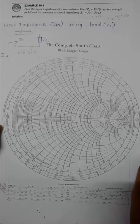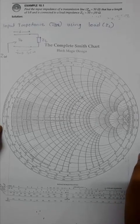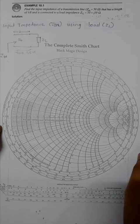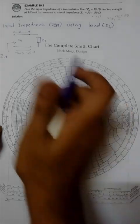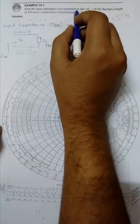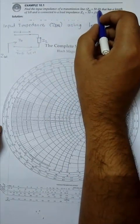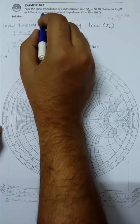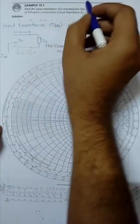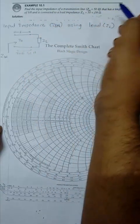Hi YouTube, welcome to Smith Chart tutorial. Today I'm going to show you how to find input impedance using load. Here is the example: find the input impedance of transmission line Z0 equals 50 ohm that has a length of lambda by 8 and is connected to load ZL equals 50 plus 50j ohm.